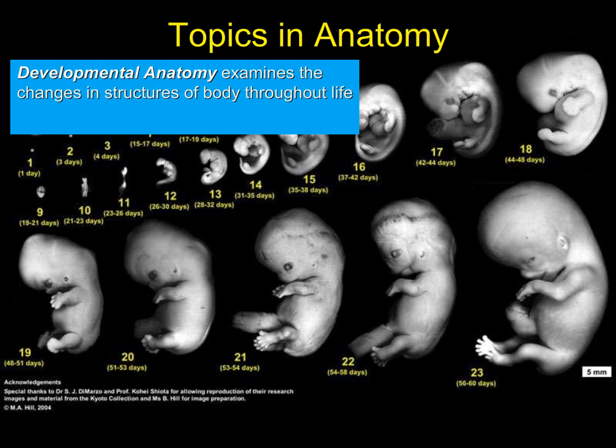Another approach to studying anatomy is developmental anatomy, which examines the change in structures of the body throughout the life period — starting from a fertilized egg, going through the embryo, the fetus, and eventually the neonate. Just like humans, there are profound changes in the anatomy of cats, dogs, and even horses throughout this developmental period.